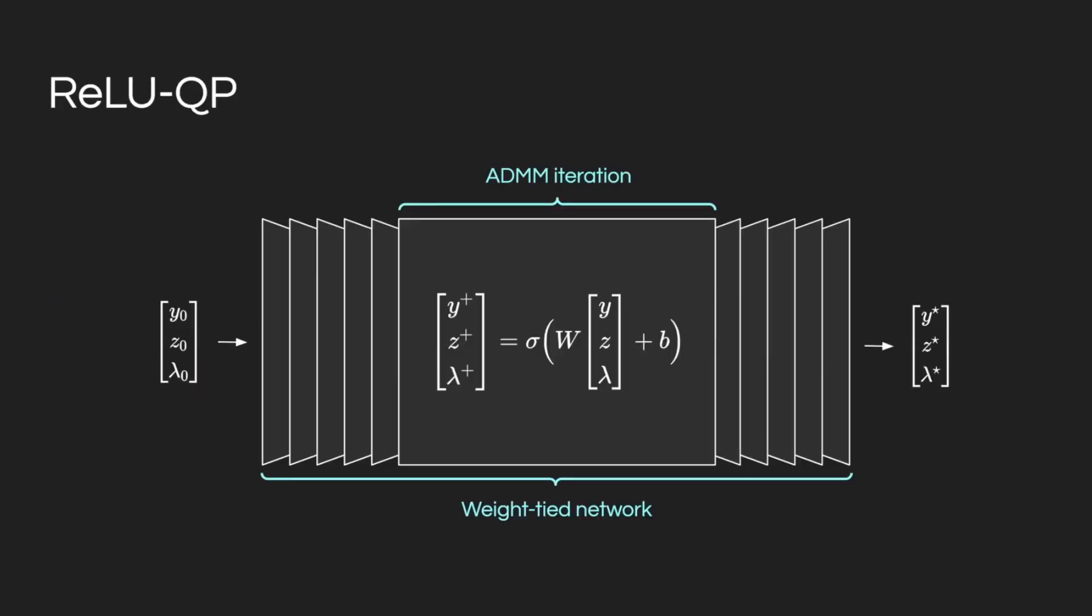RELUQP maps these updates into an affine layer with partial RELU activation, unrolling ADMM into a weight-tied deep network, which is easily implemented in any machine learning library using basic GPU operations.